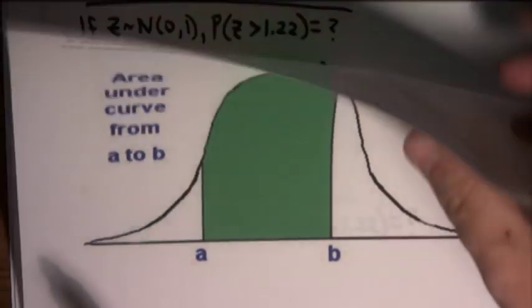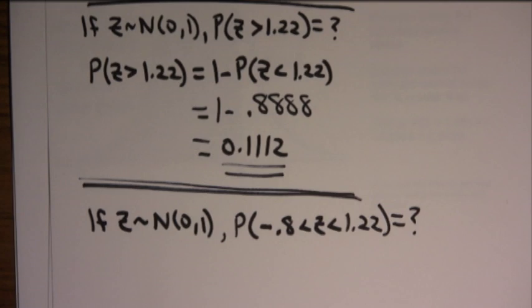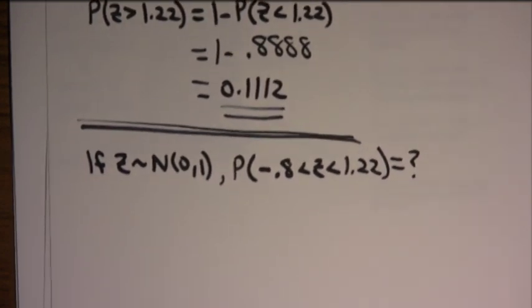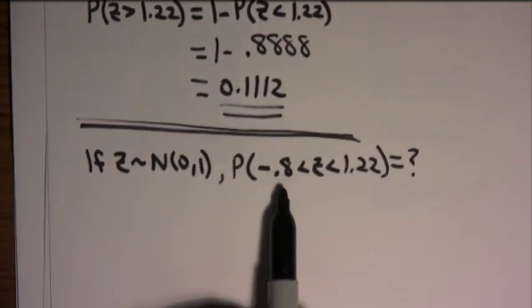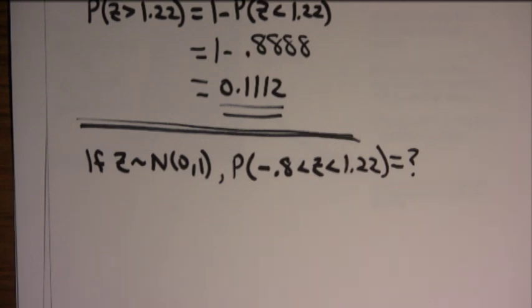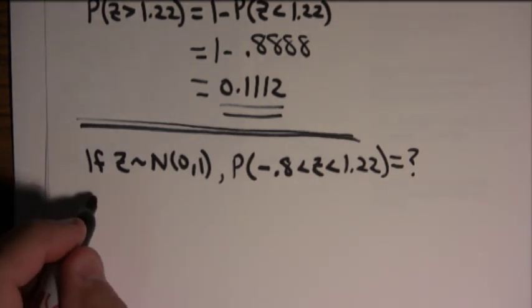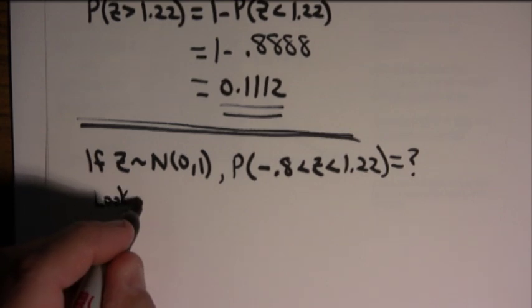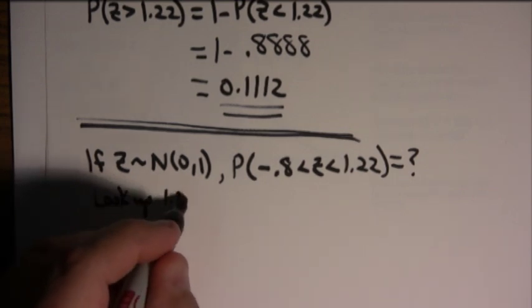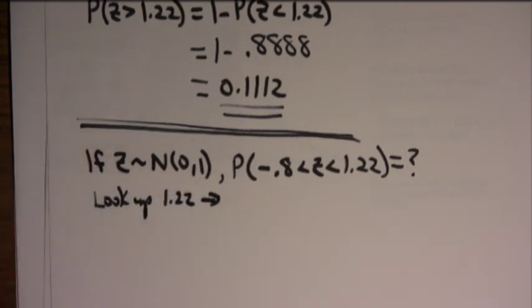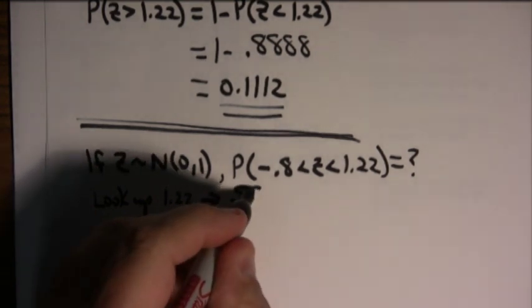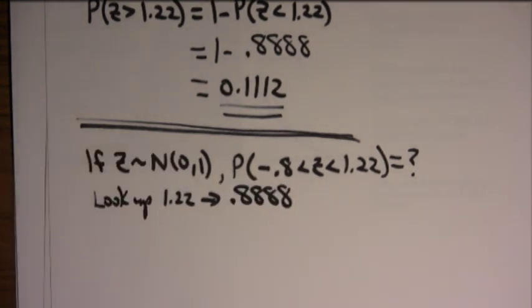So, if I want to calculate the probability that z is between negative 0.8 and 1.22, I simply look up 1.22, and I've already looked that up. I'm not going to do it again. It turns out to be 0.8888. I did that just a minute ago.